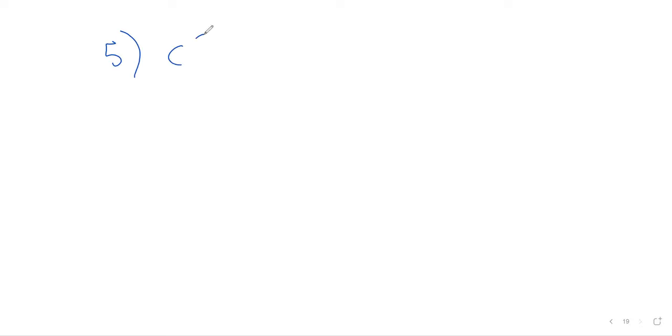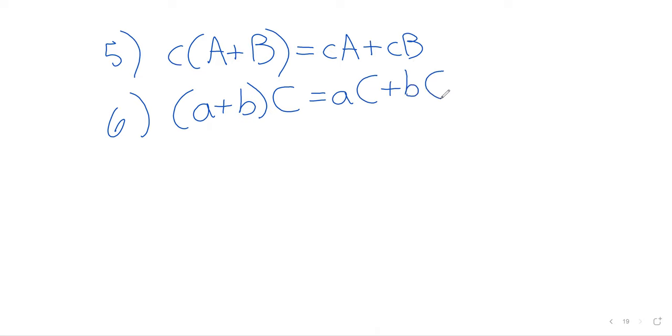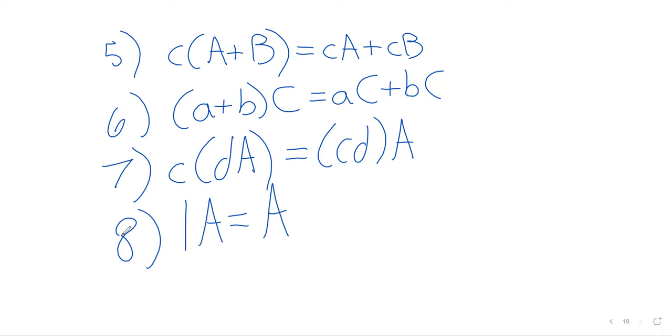Multiplication distributes over addition. And this happens in a few different ways. If you're adding the matrices, multiplication distributes over addition. And if you're adding the scalars, multiplication distributes over addition. Scalar multiplication commutes. And scalar multiplication by one doesn't do anything.